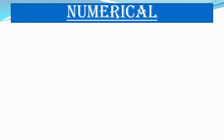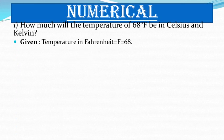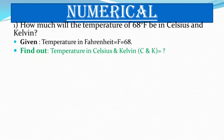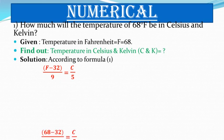Now let's solve a numerical. The first question is: how much will the temperature of 68°F be in Celsius and Kelvin? Given: temperature in Fahrenheit = 68°F. We need to find the temperature in Celsius and Kelvin. Using formula one: (F − 32) / 9 = C / 5, where F = 68.